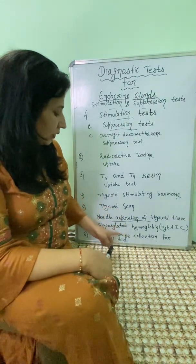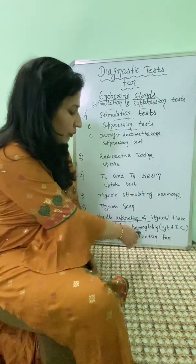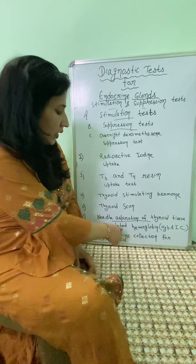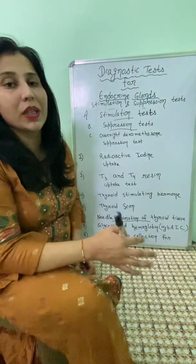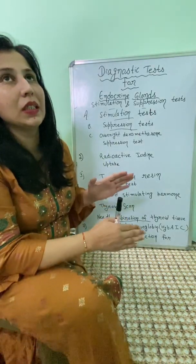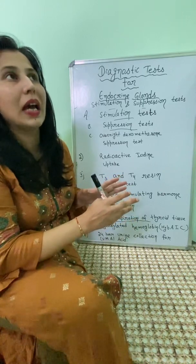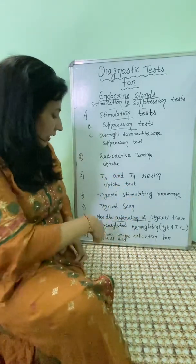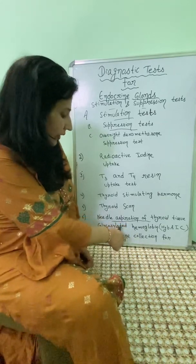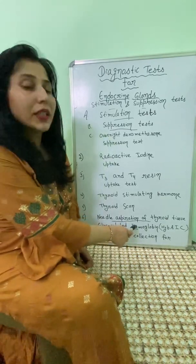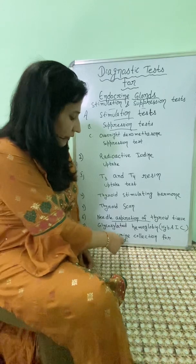Next is the glycosylated hemoglobin test, also known as HbA1c. In this test, glucose is bound to hemoglobin. It reflects blood glucose levels over the past three to four months. If blood glucose has been elevated, the glycosylated hemoglobin level will also be elevated.